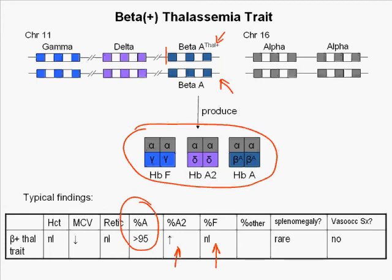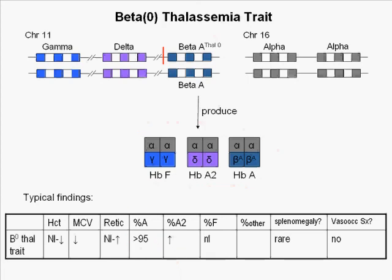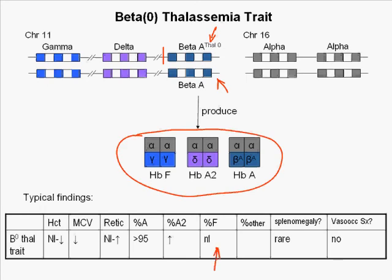They do have microcytosis, target forms on the peripheral smear, and rarely splenomegaly. In beta zero thalassemia trait, one beta globin gene is normal and the other carries a mutation that completely eliminates its production of beta globin. Three hemoglobins are produced: a small amount of hemoglobin F, a slightly elevated amount of hemoglobin A2, and more than 95% hemoglobin A. Individuals with beta zero thalassemia trait have no significant morbidity or mortality, with microcytosis, target forms, and rarely splenomegaly.